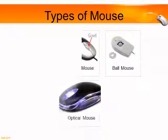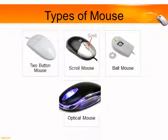A mouse can be of different types. Two-button mouse, scroll mouse, ball mouse, and optical mouse are four types of mouse. A two-button mouse has only a left button and a right button.